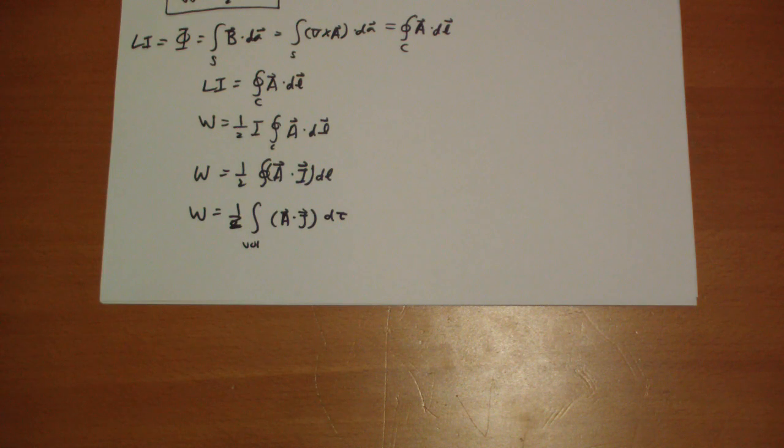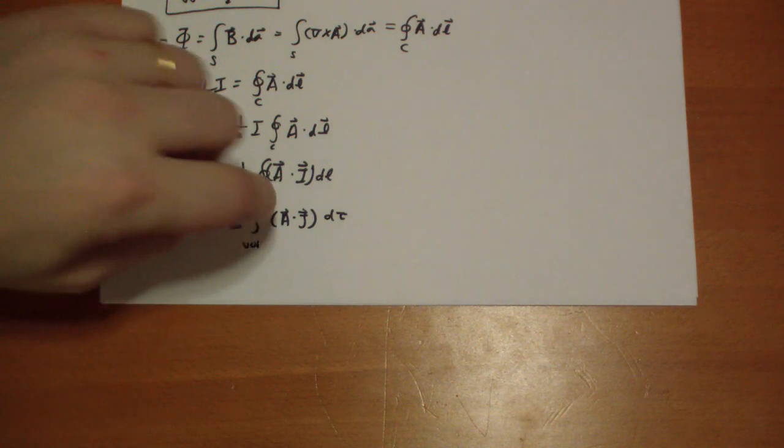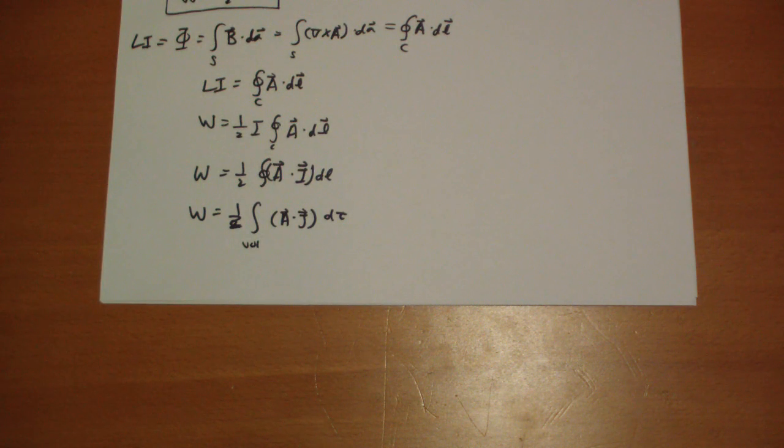So now we have a more general equation that describes currents flowing through a volume, the A vector those generates, and we just dot them together, and that'll give us the work it took to build up that A vector field.